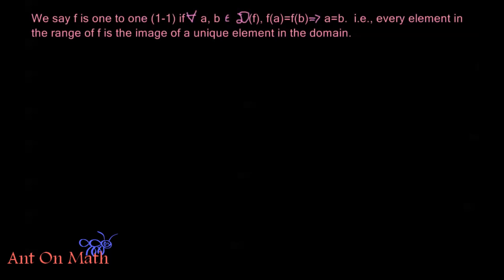So we say that f is one-to-one, and we'll sometimes just write it 1-1 for shorthand, if for every a and b in the domain of f, f(a) equals f(b) implies that a equals b. So if I have two images that are equal, that means that they were both mapped to by the same element of my domain. So in other words, every element in the range of f is the image of a unique element in the domain.